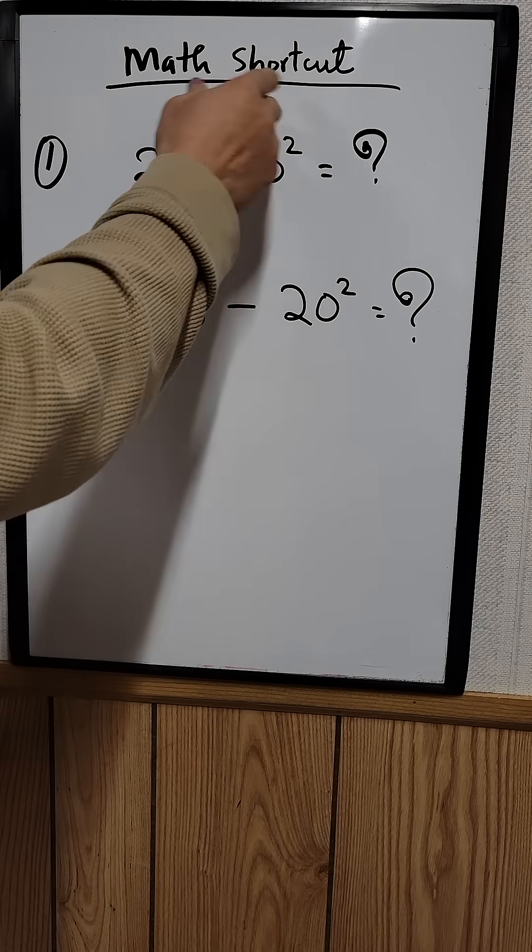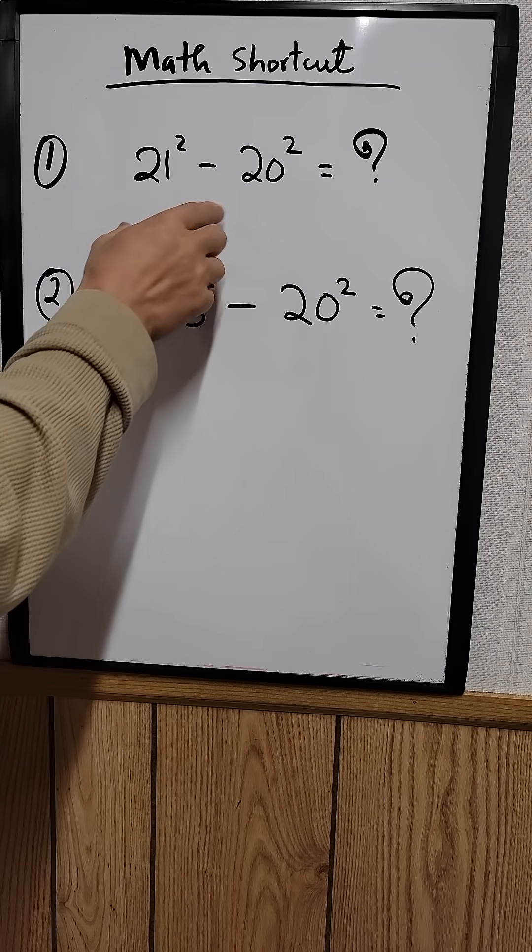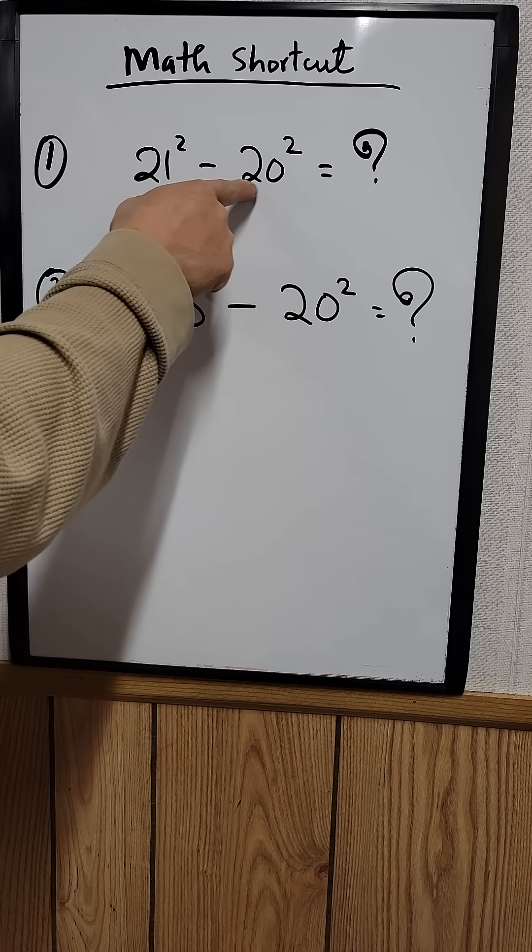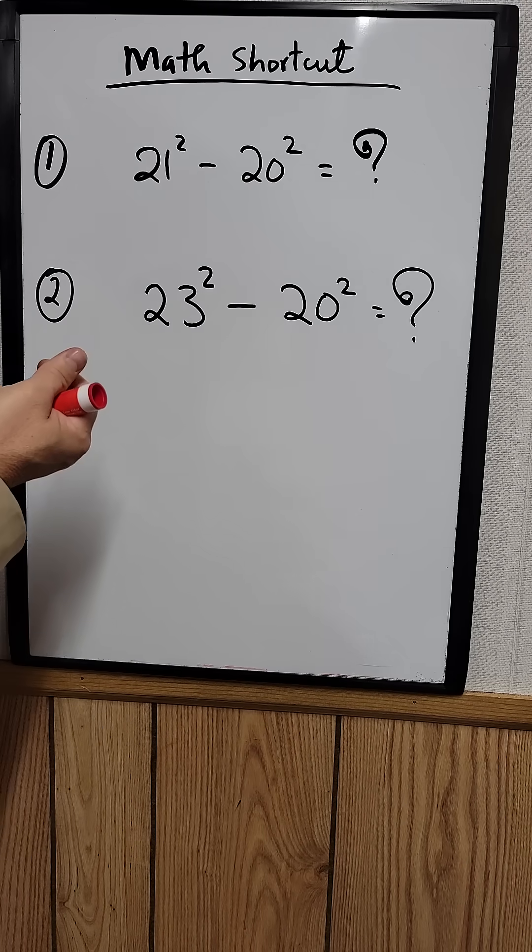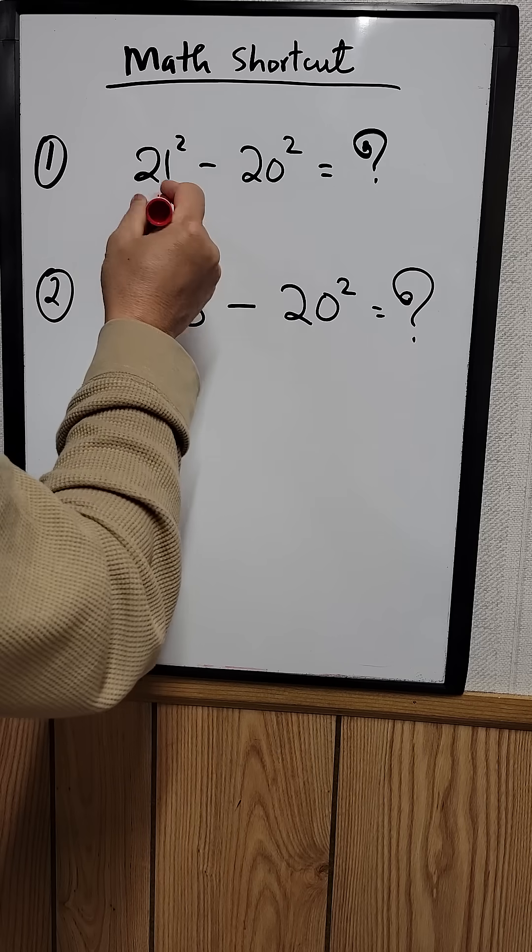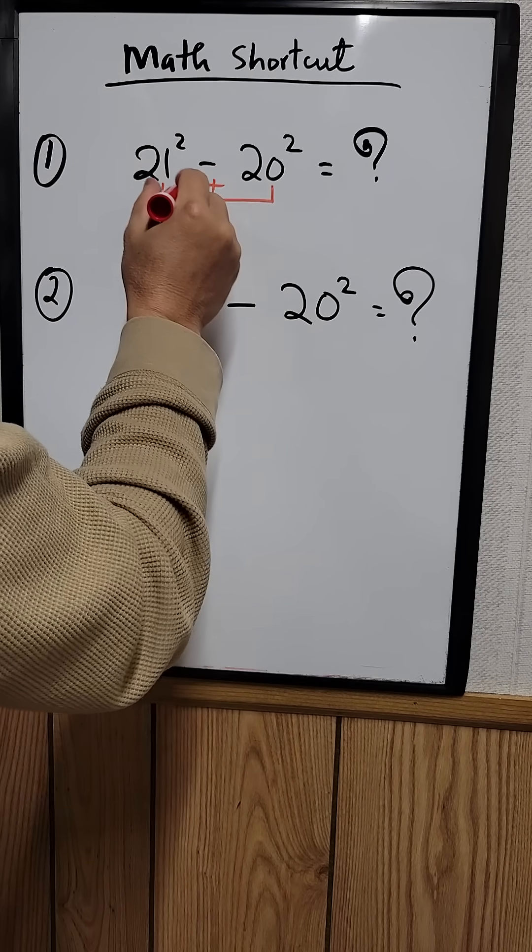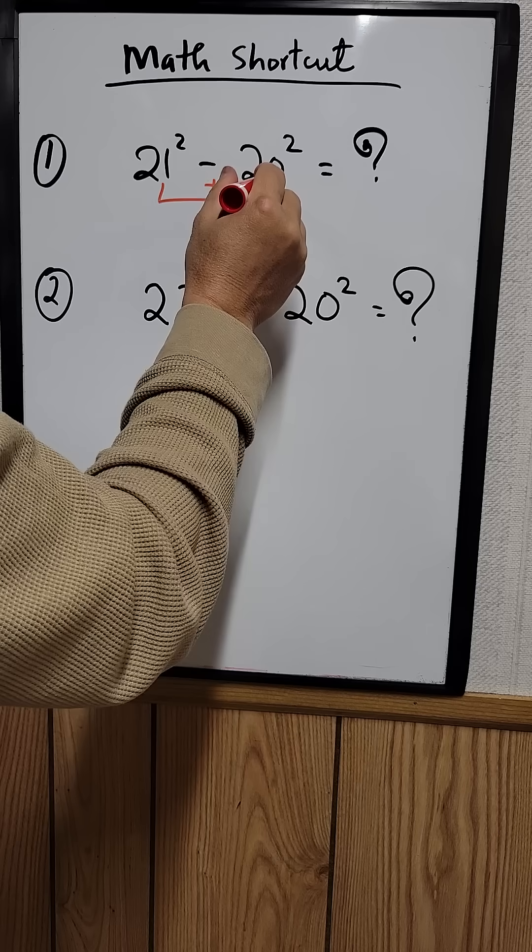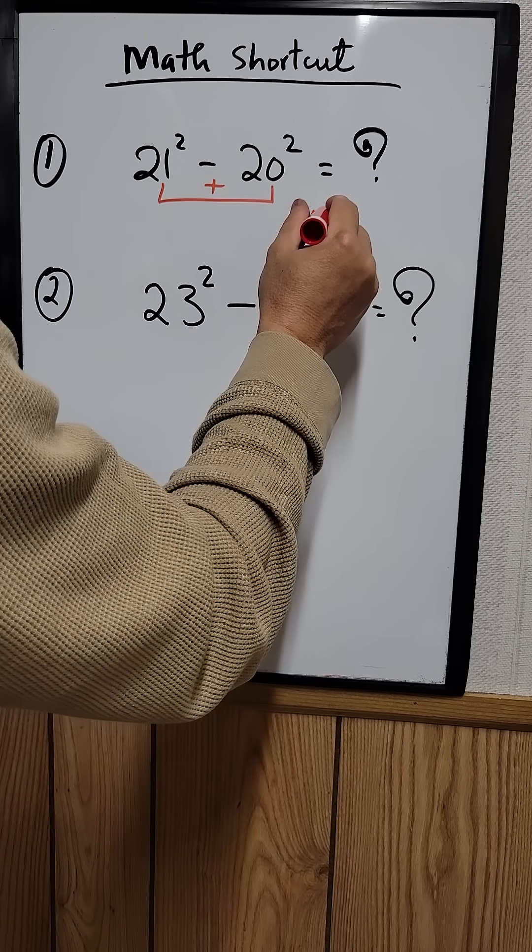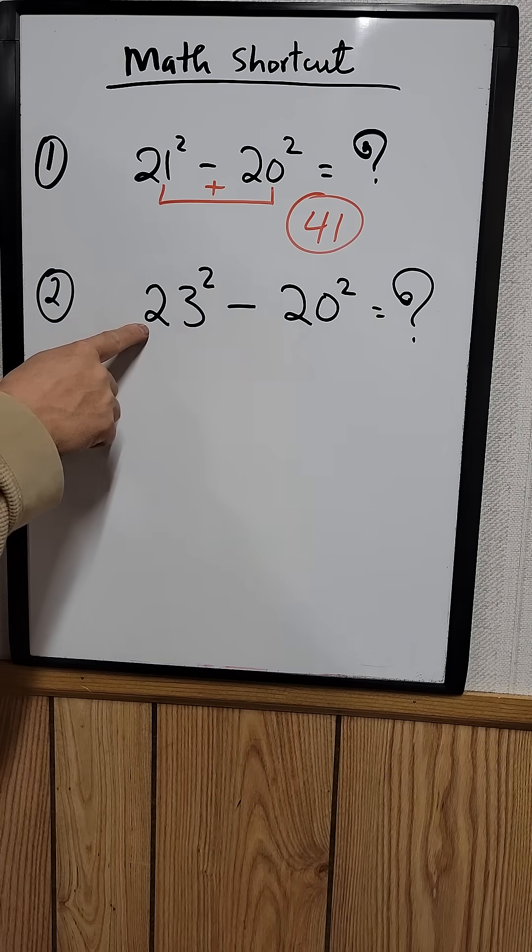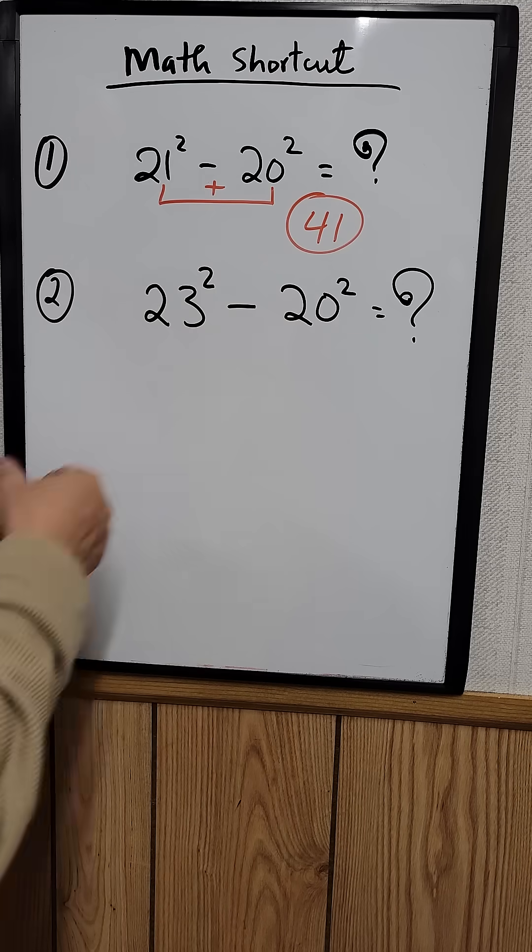I'm going to show you a math shortcut: how to calculate a difference of squares like this. So 21² minus 20². All you need to do is add them up right here. What is 21 plus 20? It will be 41. So that's your answer right here. How about this one: 23² minus 20²?